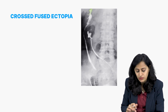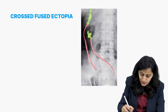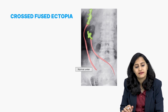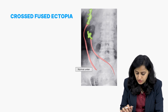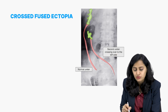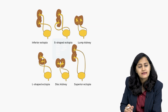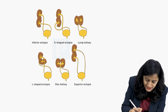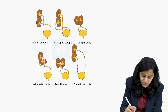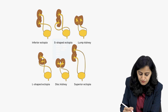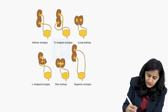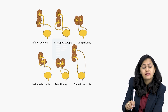This is different from duplication — in duplication, both ureters drain on the same side. In cross-fused ectopia, the ureter drains on the opposite side. There are various types: the moieties can be fused at the inferior pole, superior pole, or form an L-shape. So there are various types of cross-fused ectopia.